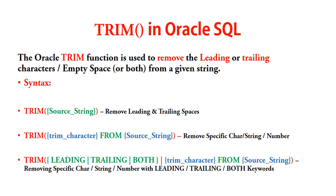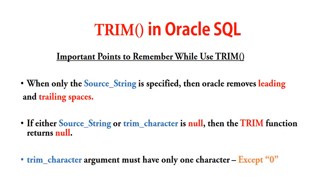When we specify only the source string, it will remove the leading and trailing spaces from the beginning and end of the given source string. If either the source string or trim character is null, Oracle Trim function will return null. You must make sure your source string or trim character is not null. The trim character argument must have only one character.